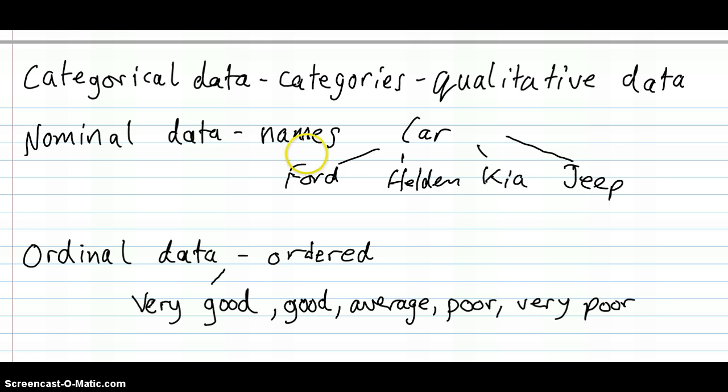The difference with nominal data where there was no kind of order to the data - in this case you can see that the different possibilities, the different responses have an order. Very good is first, good should come after that, average should come next, poor should come after that and very poor should come after that. You could reverse them, you could reverse the order, but nevertheless there's an inherent built-in order into the possible responses, into the categories. In nominal data there was no inherent order. Someone might say well what if you put them in alphabetical order that would be in order. Well you could do that, but that would be your decision, that would be your arbitrary imposition on the data. There's no inherent reason why they have to be in alphabetical order.